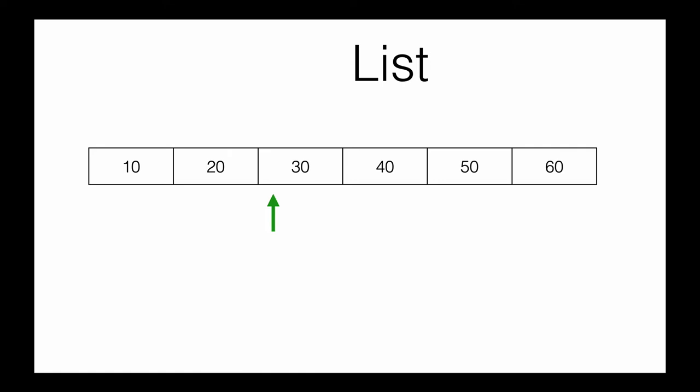In the case of a list, we have an option — depending on how we code — to go back and access a previously used or accessed element. However, in a stream, once you hand over the element to the next workstation, you never get it back. This is one main difference between a list or other similar data structures versus a stream.